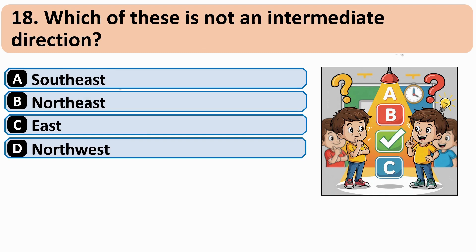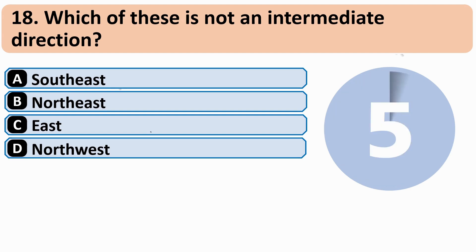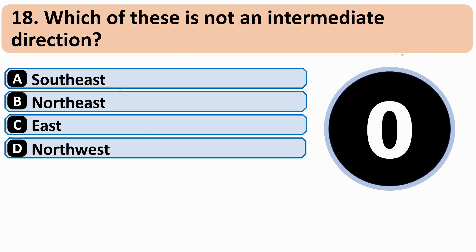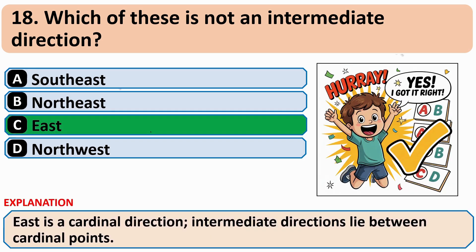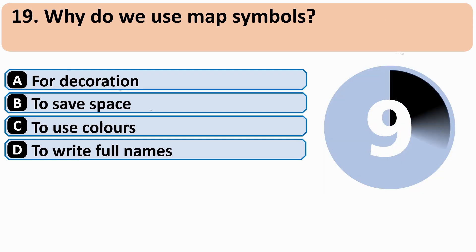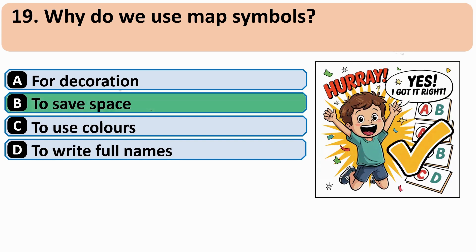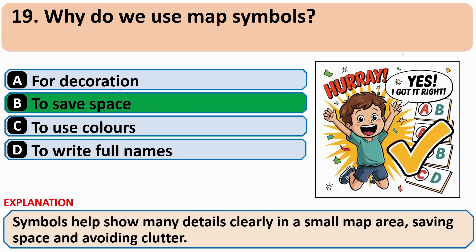Which of these is not an intermediate direction? The correct answer is C — east. The correct answer is B — to save space.